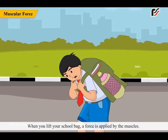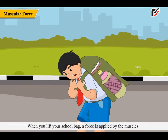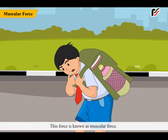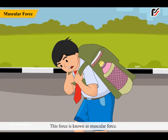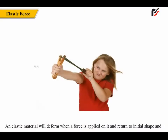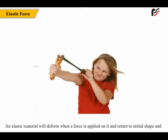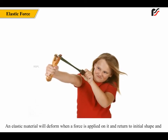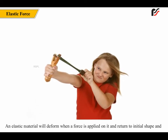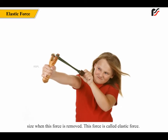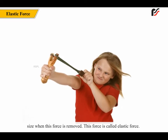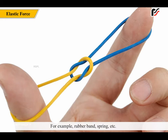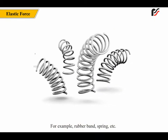When you lift your school bag, a force is applied by the muscles. This force is known as muscular force. An elastic material will deform when a force is applied on it and return to its initial shape and size when this force is removed. This force is called elastic force. For example, rubber band, spring, etc.